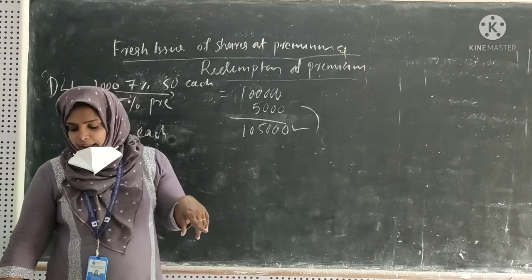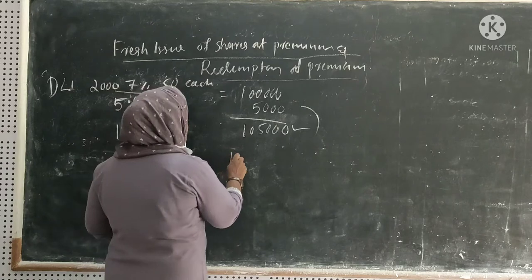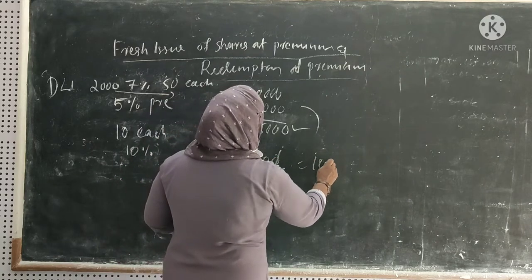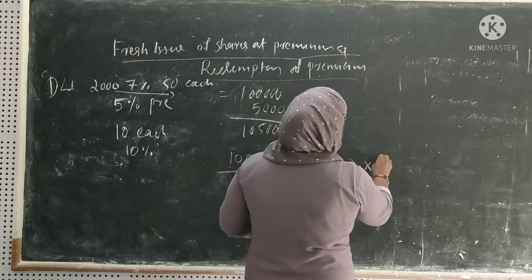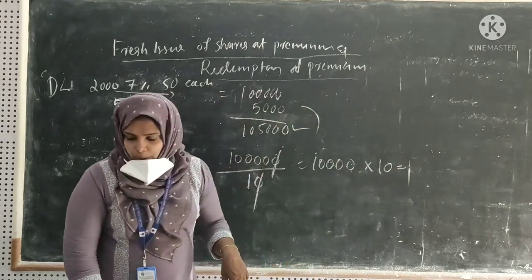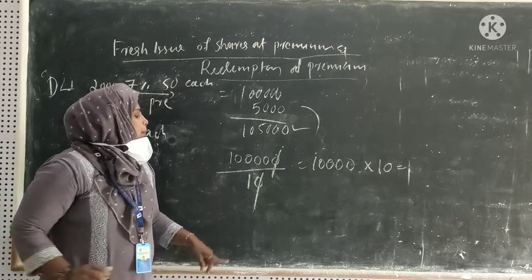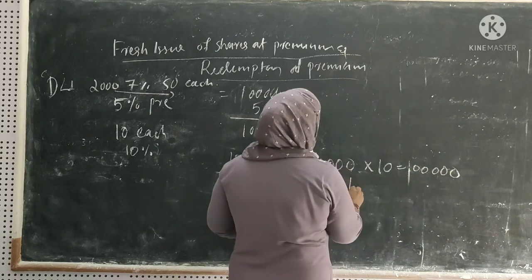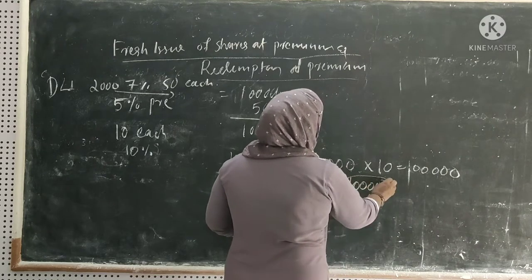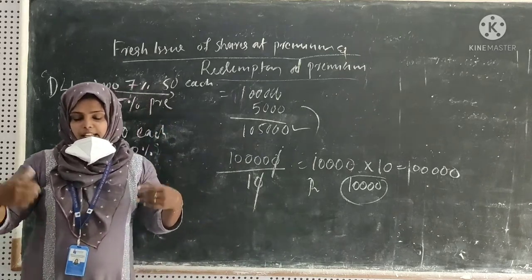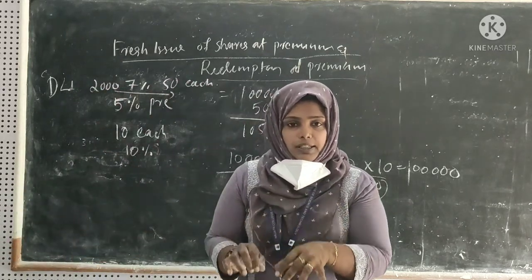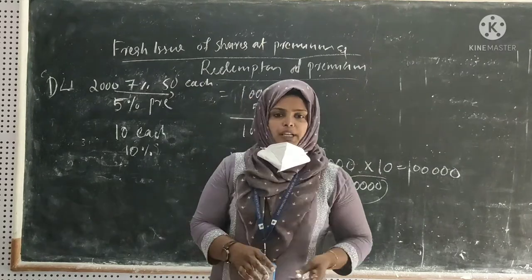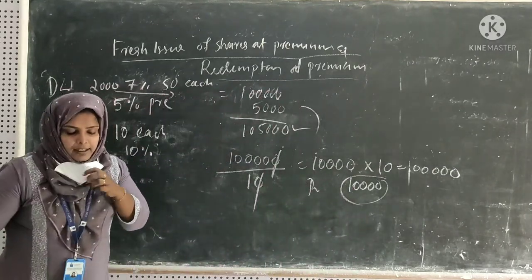The number of shares to be issued: how many share issues are we looking at? We can share with the 10. In order to create the amount, we will make this 1 lakh. We will get premium for this. We will make a new share issue.